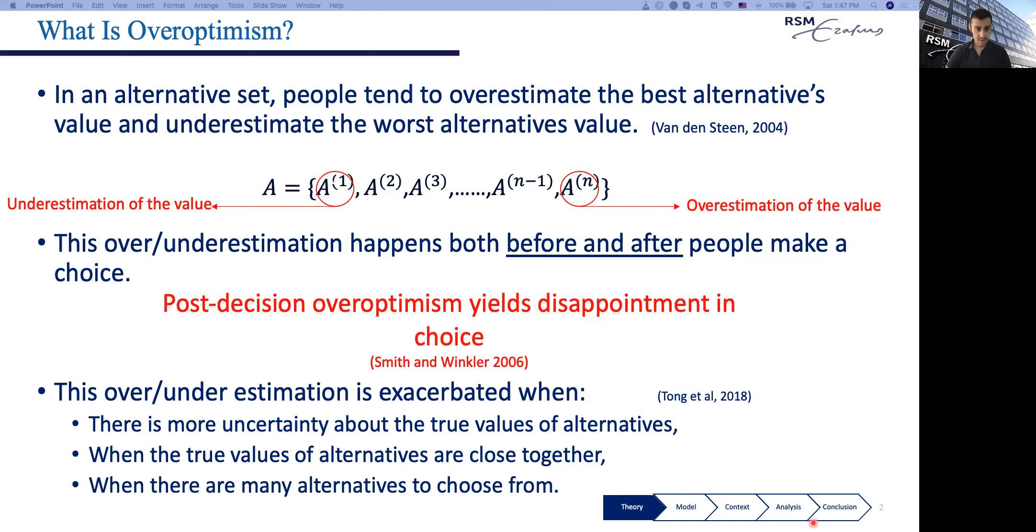Concerning the moderation effects, it has been shown that when there is more uncertainty about the true values of alternatives, when these true values are closer together, and when there are many more alternatives to choose from, this effect is much more pronounced and stronger.